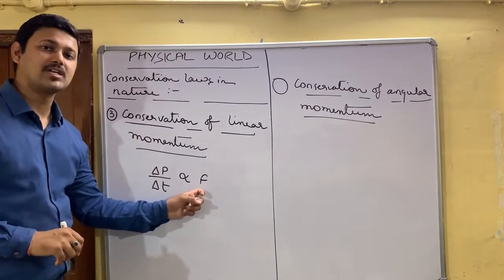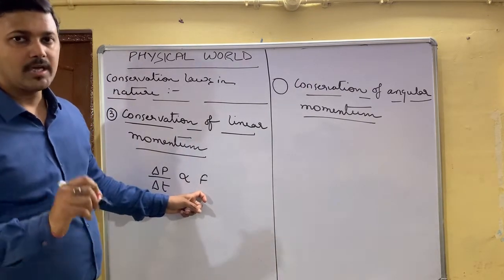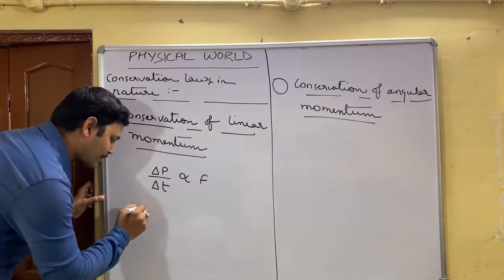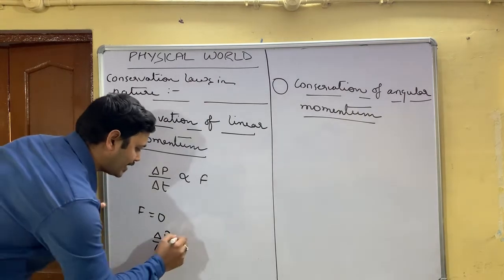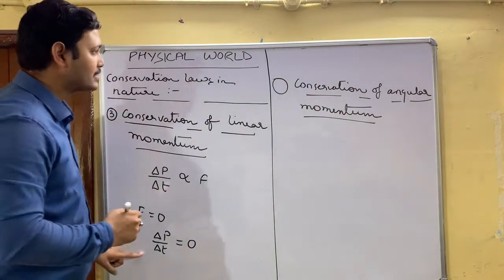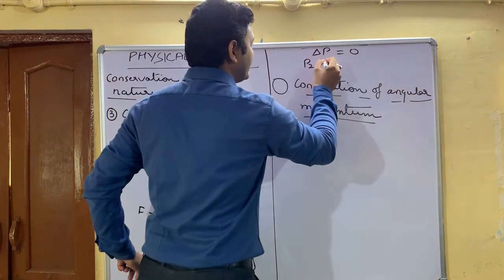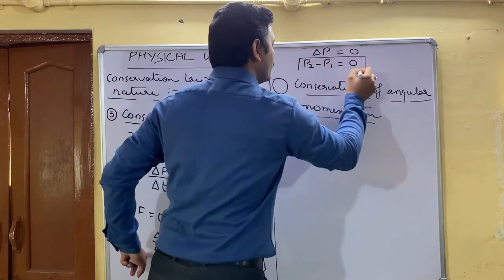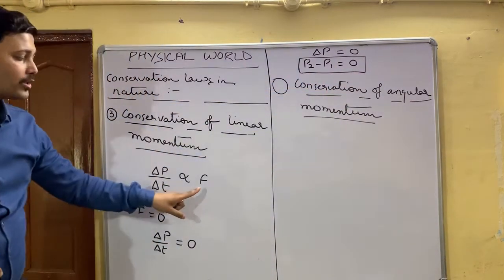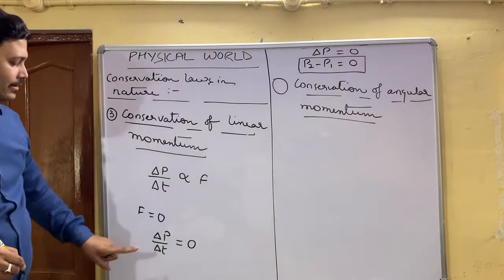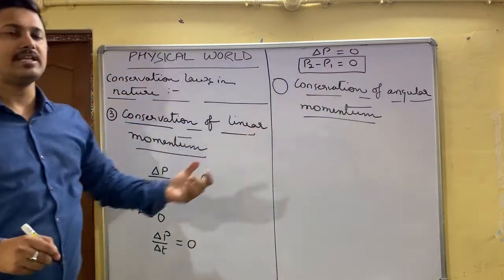That means, if the total external force applied on a body becomes 0, then delta P upon delta T will be equal to 0, which means delta P equals 0. This means P2 minus P1 will be equal to 0. This is the meaning of conservation of linear momentum — when the total external force applied on the body becomes 0, delta P becomes 0, so P2 minus P1 equals 0.